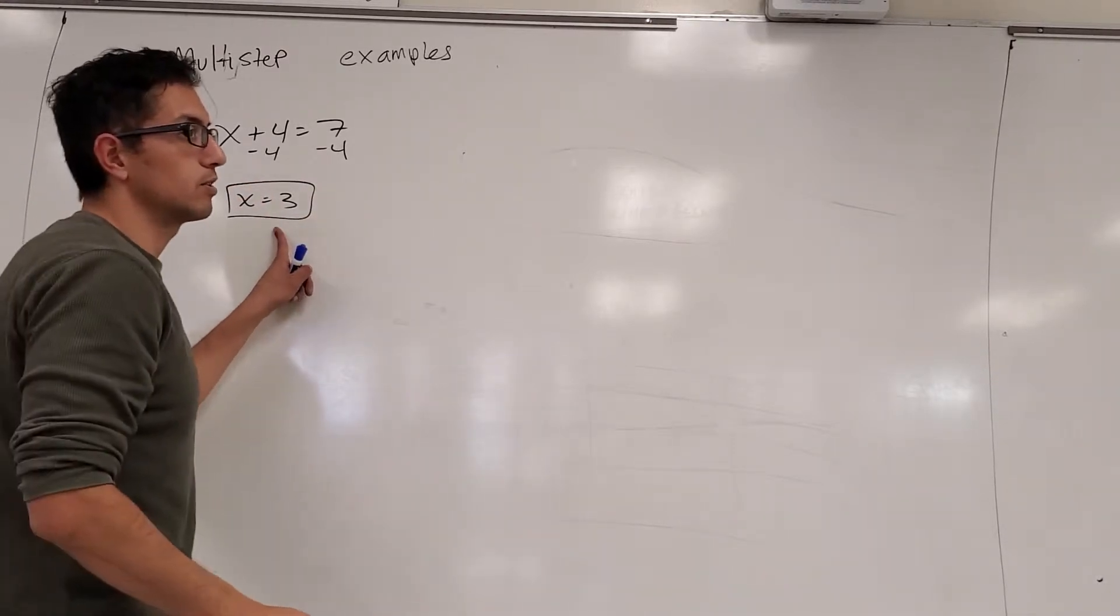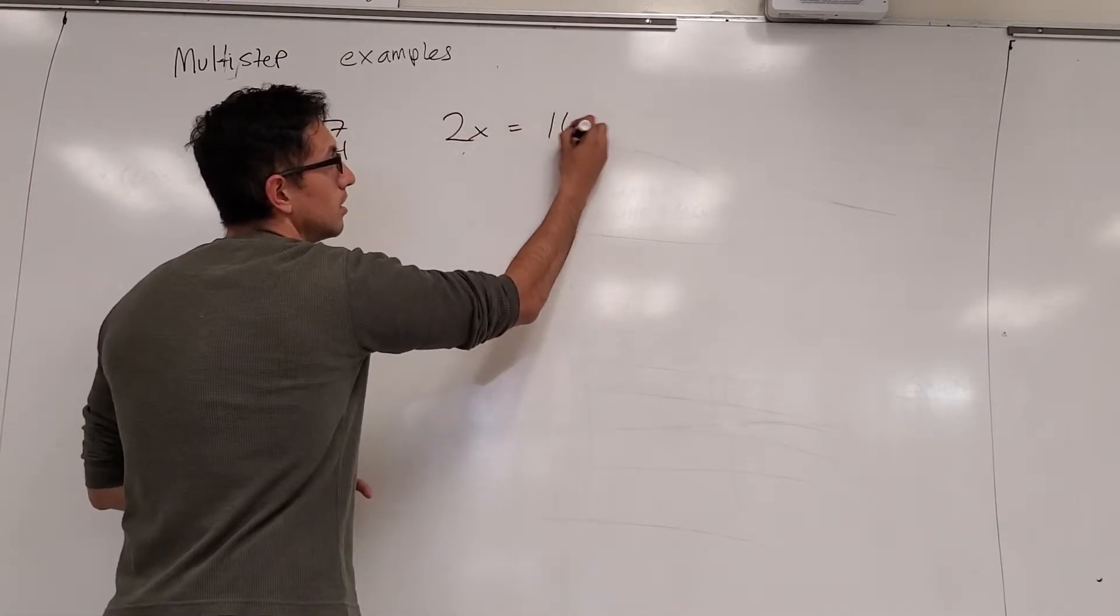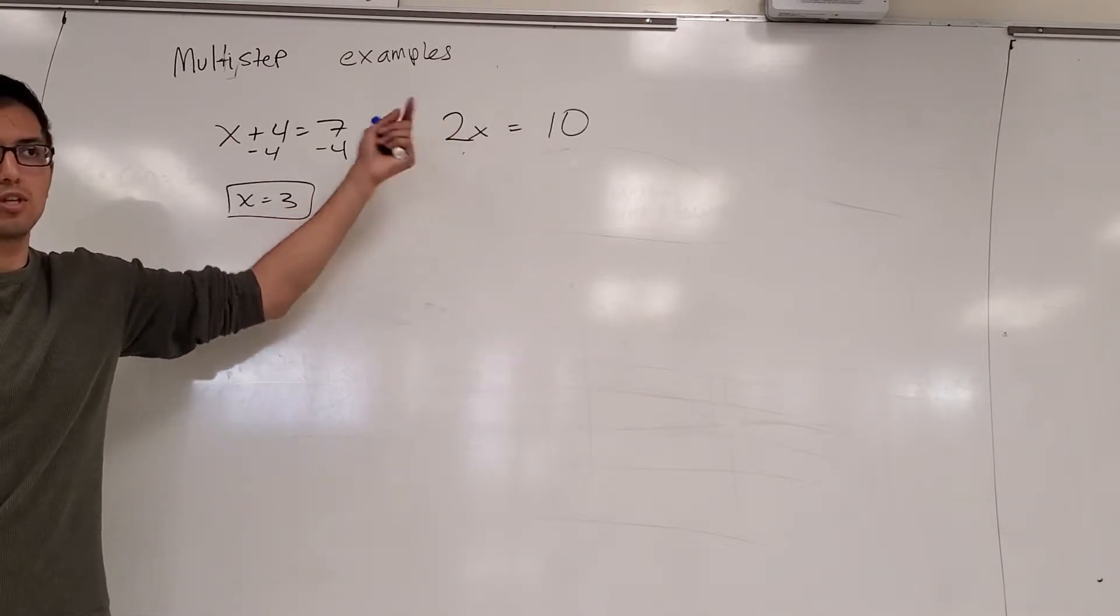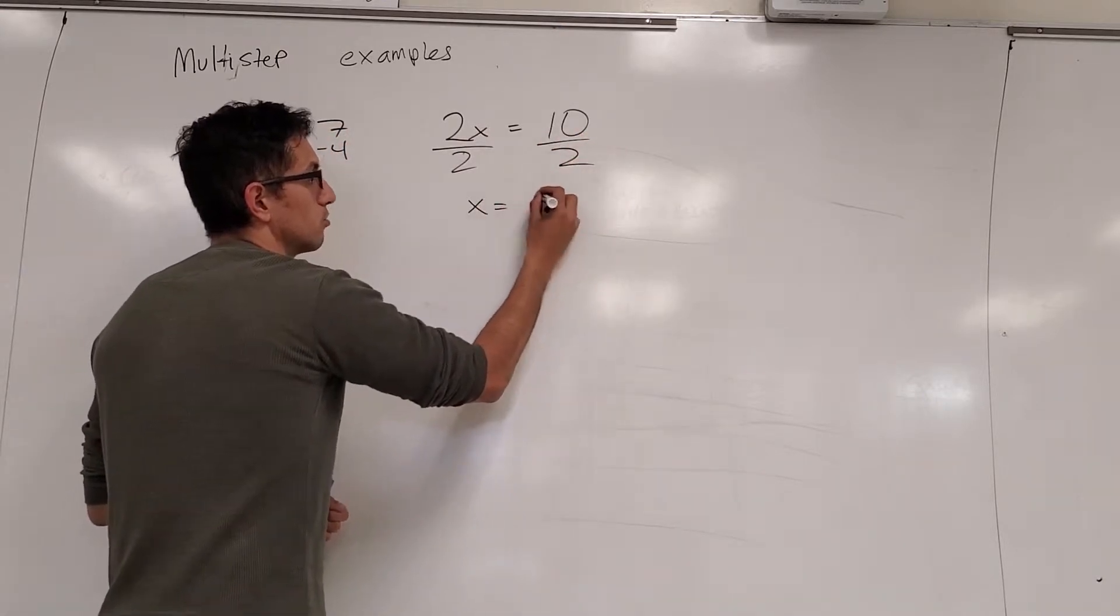That's the first one, it's a single step. Another single step equation, 2x equals 10. In this case, we're multiplying the 2 and the x together, so the opposite of multiply is divide. So divide both sides by 2, and you get x equals 5.